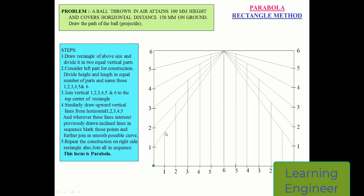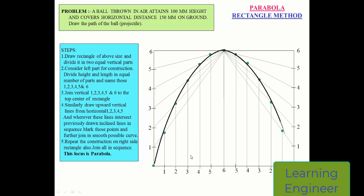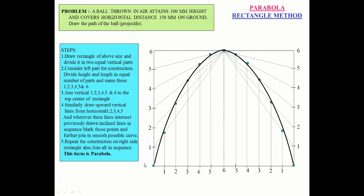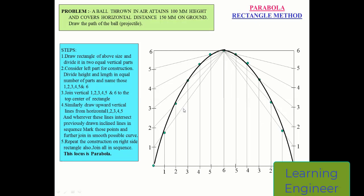Now mark the intersection points: the vertical from point one intersects the inclined line of one here, vertical from two intersects inclined line of two here, vertical from three intersects here, and similarly for four, five, and six. On the right-hand side, mark intersections in the same way. We will then use the French curve to draw a smooth curve passing through all these points. The locus obtained is the projectile, known as the parabola. This is how we draw the parabola using the rectangle method.